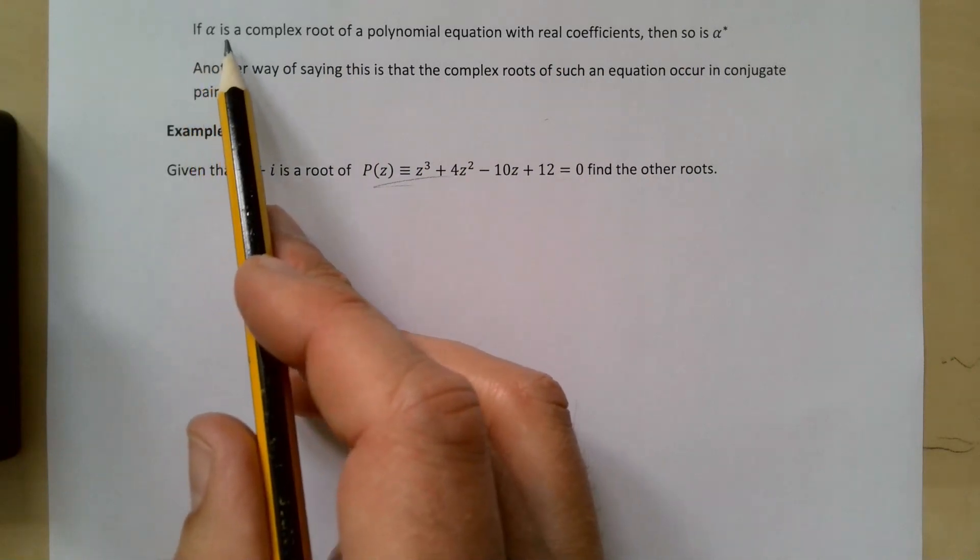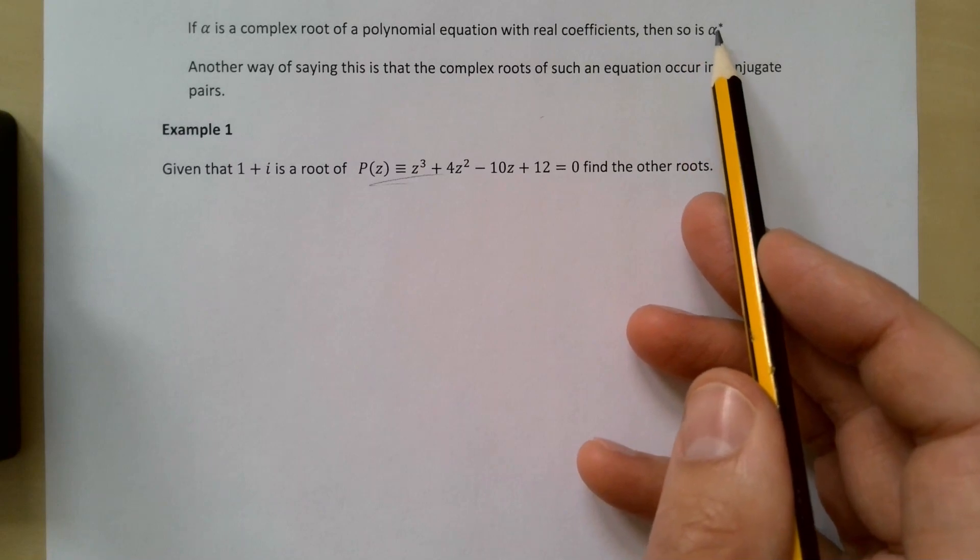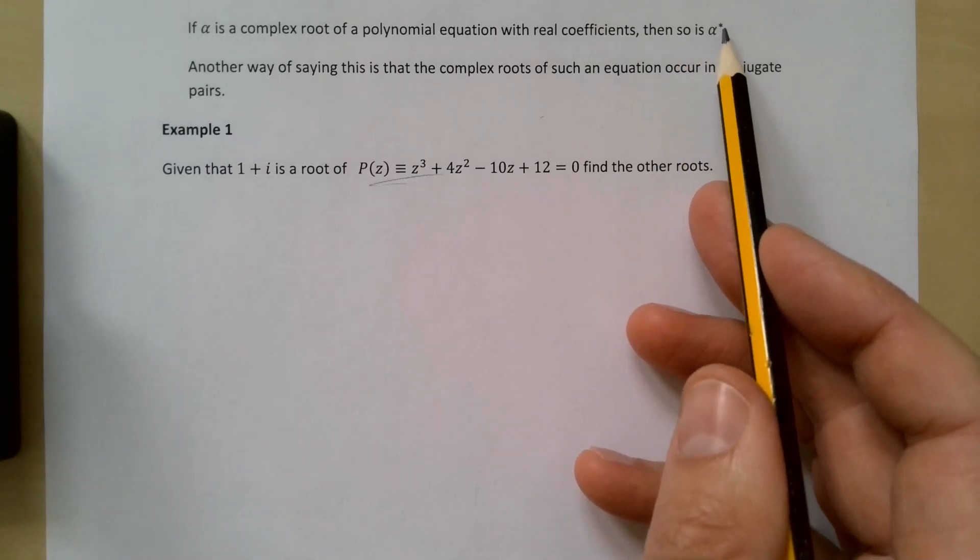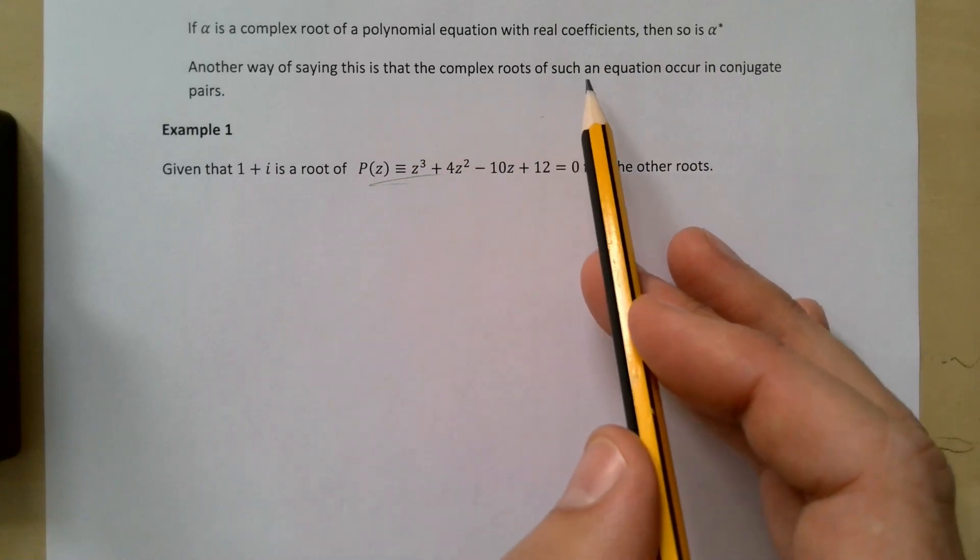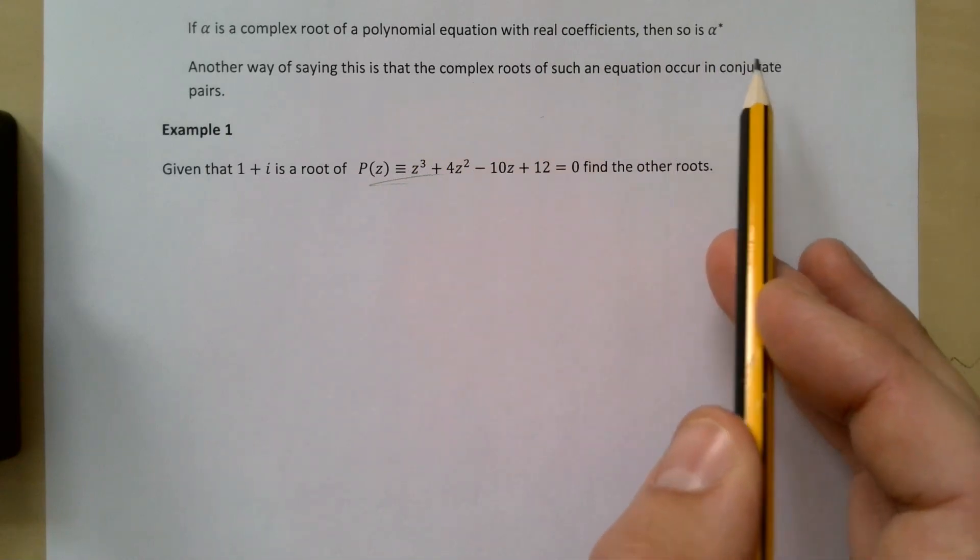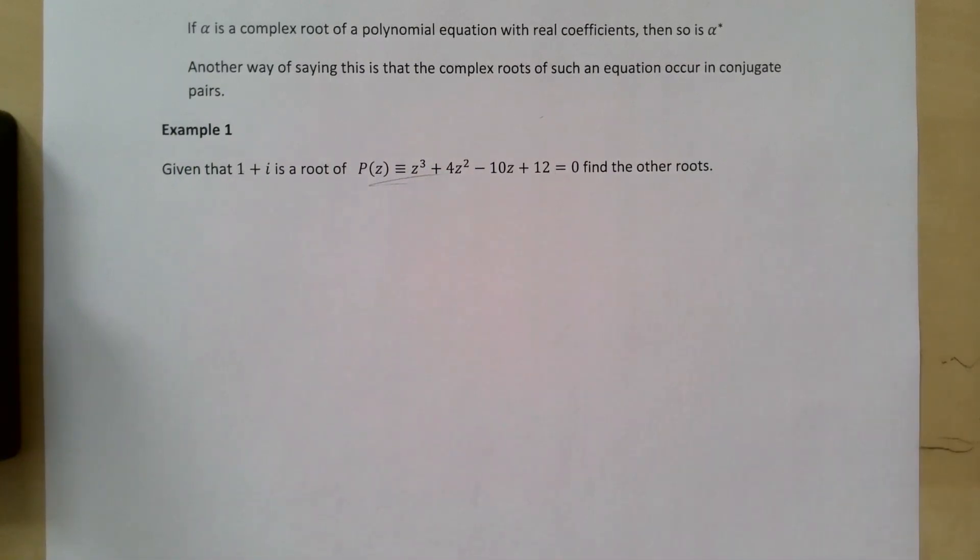If alpha is a complex root of a polynomial equation with real coefficients, then so is the complex conjugate of alpha. Another way of saying this is that the complex roots of such an equation occur in conjugate pairs. Given that 1+i is a root of this, find the other roots.